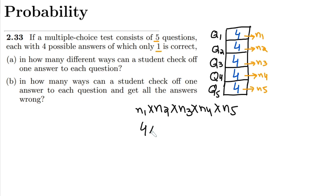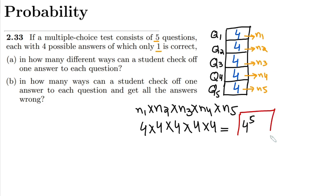Therefore it would be 4 multiplied by 4 multiplied by 4 multiplied by 4 multiplied by 4, which gives us 4 raised to the power 5. That is the answer to part A. You can also calculate the numerical value using a calculator.